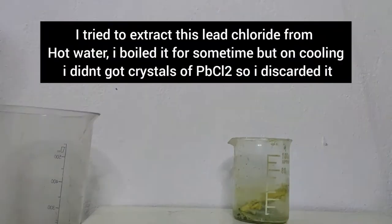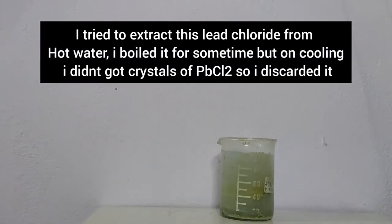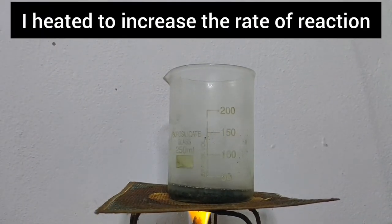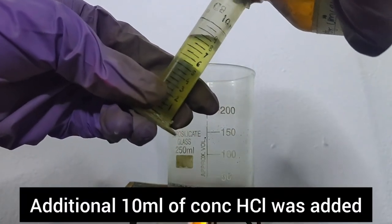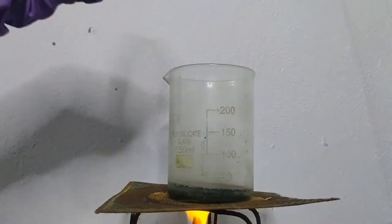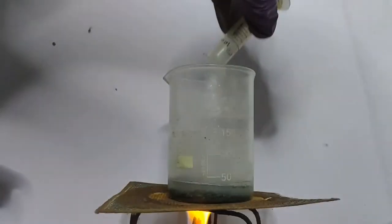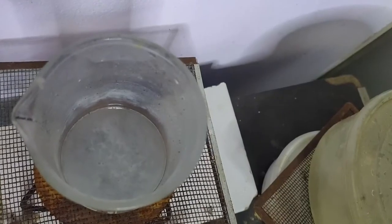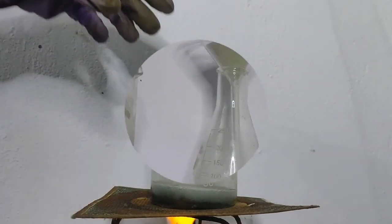This is the leftover anode and I tried to extract lead chloride, but I could not extract it, so I discarded it. Now, I heated up the solution so that HCl could react faster. I also added 10 ml of HCl. On heating, the reaction got faster. And you can see bubbles of hydrogen gas are being evolved.